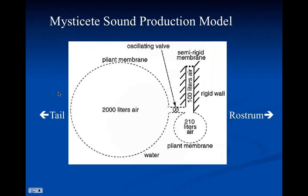From the physicist's view of whale sound production: the lungs provide a large volume of air, and there's an oscillating valve where air is pushed from the lungs into the laryngeal sac through a pliant membrane — that's the process of making a call. Then a rigid tube goes up into the skull of the animal, almost like an organ pipe, which may enhance the resonance of the sound. This is how the animals have evolved to make very powerful low-frequency sounds.